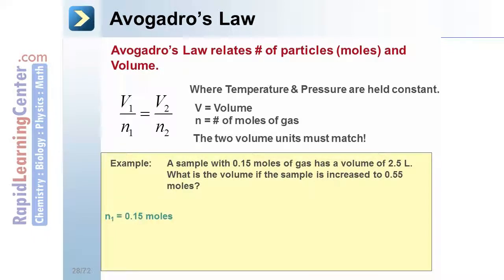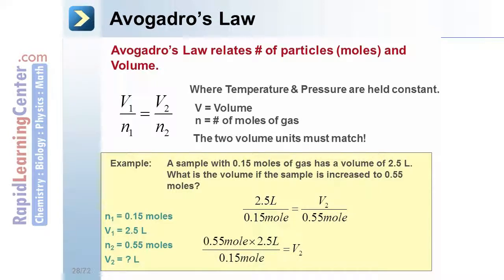For example, this problem tells us the initial moles is 0.15, and the initial volume is 2.5 liters. The final moles is 0.55 moles, and we're asked to find the final volume. These quantities are plugged into the equation. Algebra is used to solve for the unknown variable. The answer is calculated as 9.2 liters.